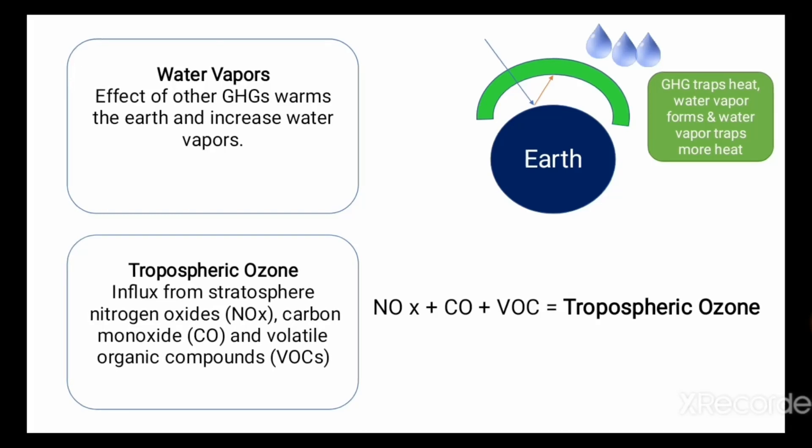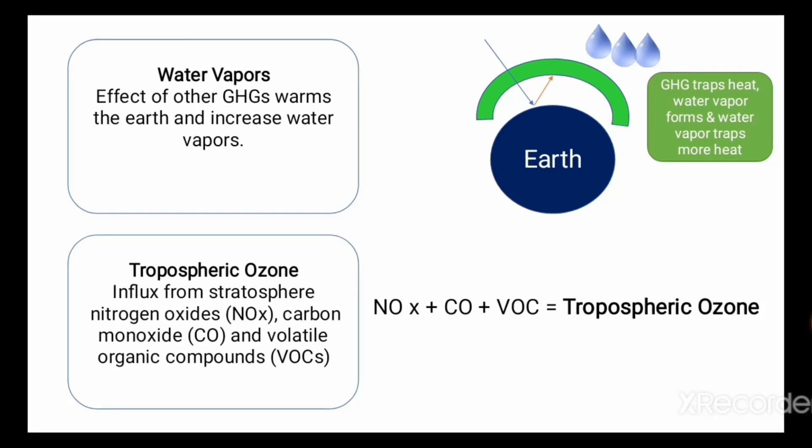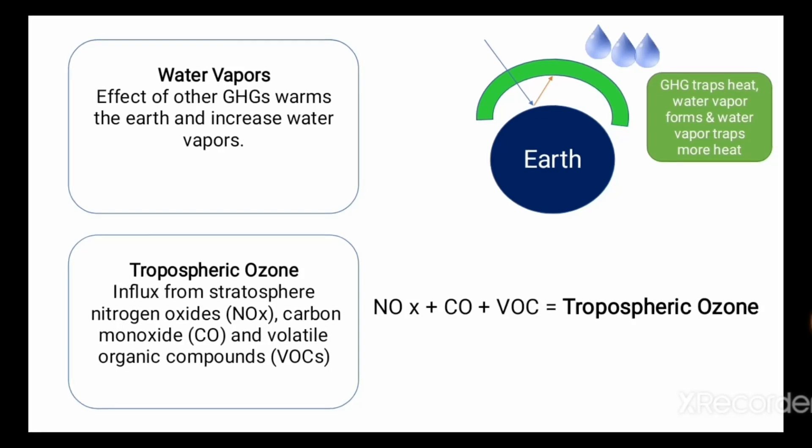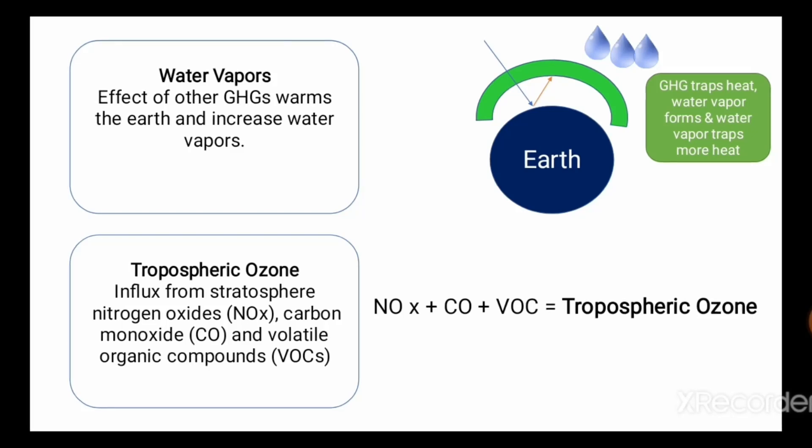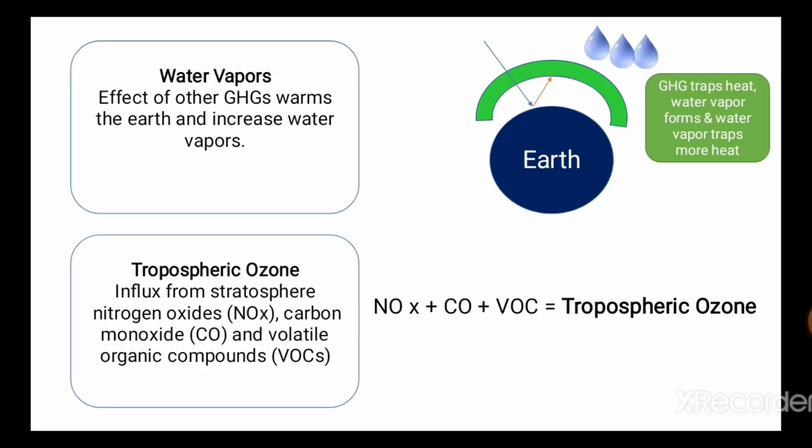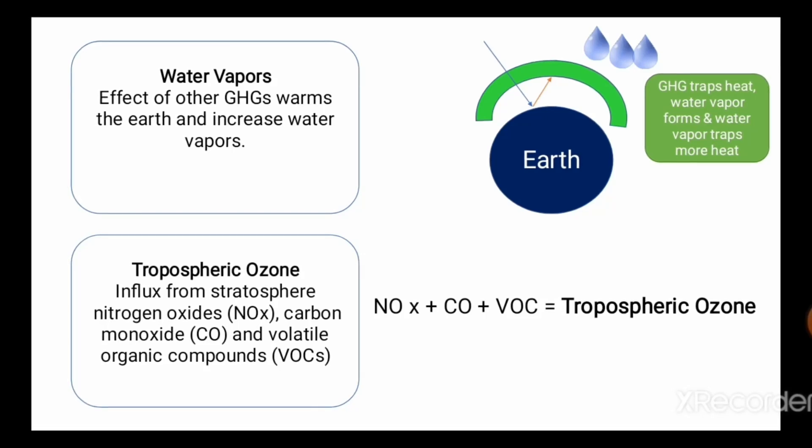We know that there is an ozone layer present in the stratosphere which protects us from UV radiation. But ozone present in the troposphere is a major greenhouse gas. It comes into the troposphere by influx from the stratosphere. Also, it is formed by the photochemical reaction of nitrogen oxides, carbon monoxide, and volatile organic compounds.